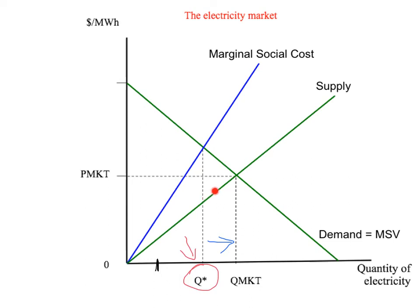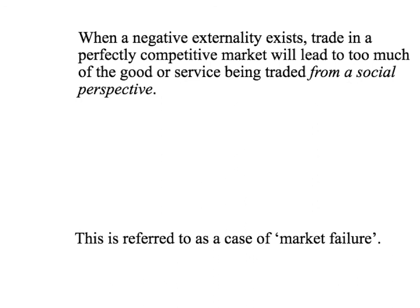We want to optimise the trade of electricity at the point where marginal social cost, including the pollution cost, equals marginal social value. Just because you have a negative externality doesn't mean we should be banning electricity — what it means is we need to think about how do we get the right amount of electricity from the market. The market by itself will produce too much, but how do we get Q star? That issue of how to give the right incentive to the market to produce Q star — to take into account the cost of pollution — will be a major part of our next few presentations. When there's a negative externality, trade in a perfectly competitive market leads to too much of a good or service being traded from a social perspective, and we refer to this as a case of market failure. Thanks for listening.